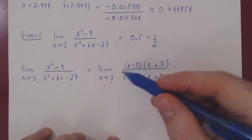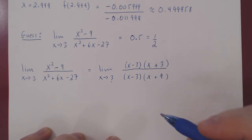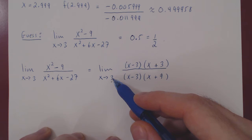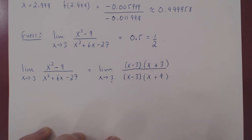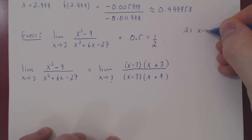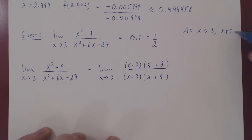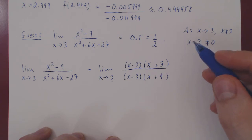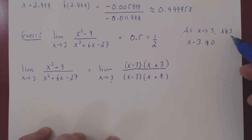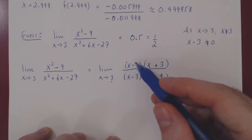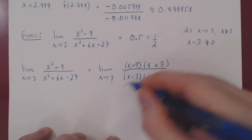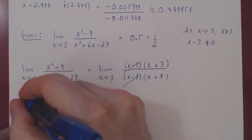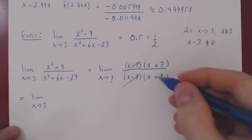Now you may want to cancel the x minus 3 terms. The question is, are we allowed to do so? Well, as x is approaching 3, x is taking on values getting closer and closer to 3, but x is never exactly equal to 3. So if x is never exactly 3, then x minus 3 is never exactly 0 — since the only way for x minus 3 to be 0 is for x to be exactly 3. As it's not the case, x minus 3 is non-zero, and so we have a non-zero term over itself. Now we can cancel, as the result is simply 1, and we're left with a simpler expression.